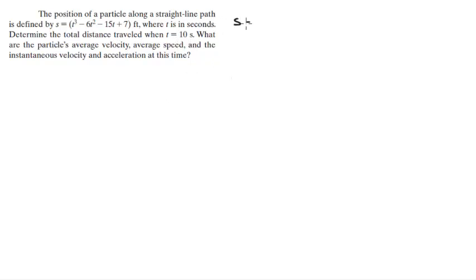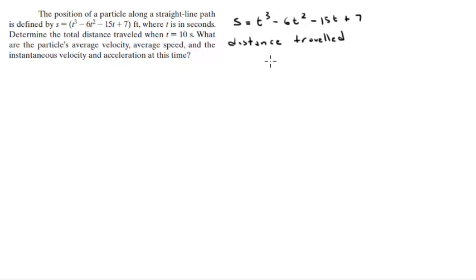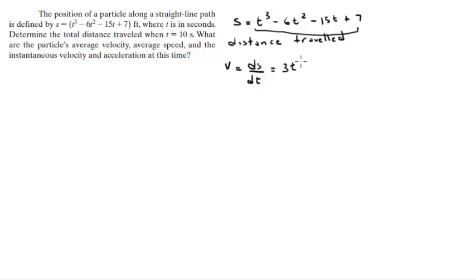We have s = t³ - 6t² - 15t + 7. To find the total distance traveled, first find the equation for velocity with respect to time. You know that v = ds/dt. The derivative of this function is 3t² - 12t - 15.